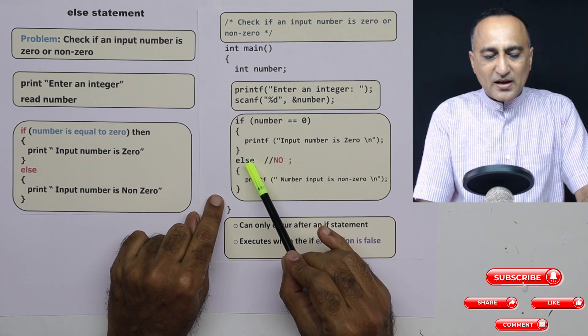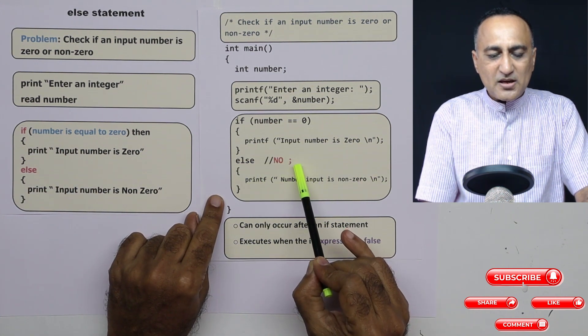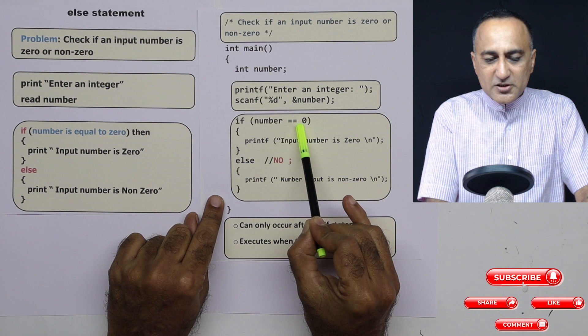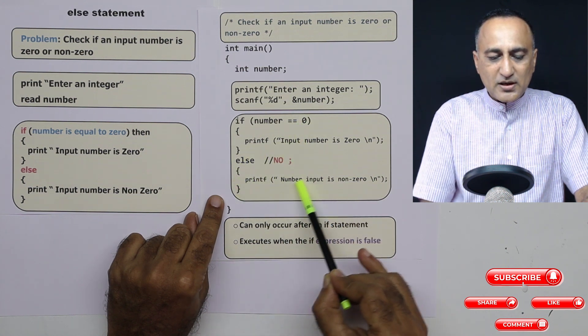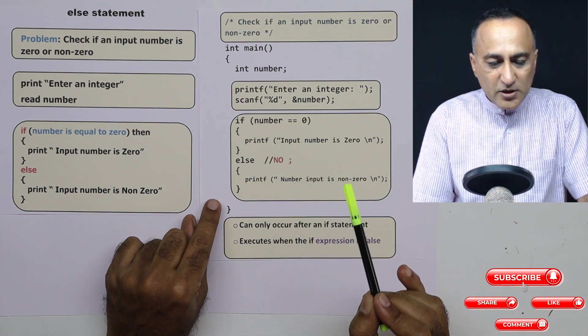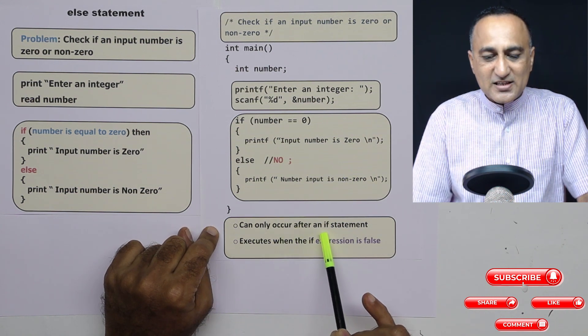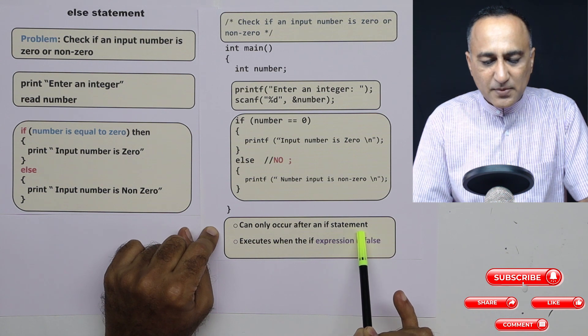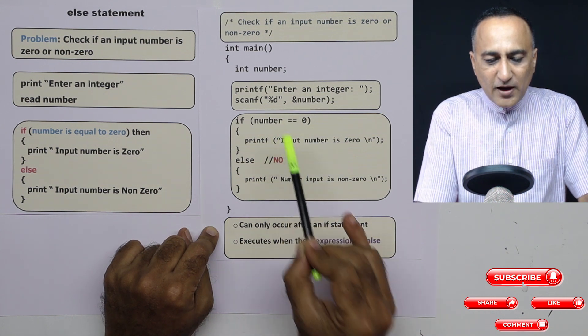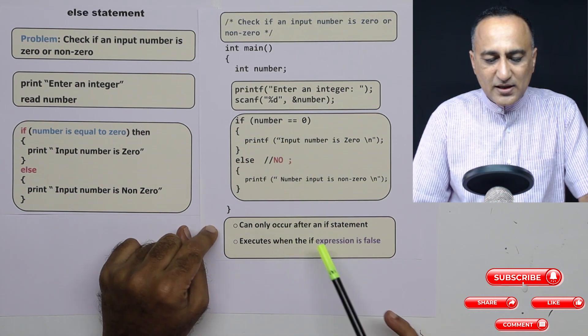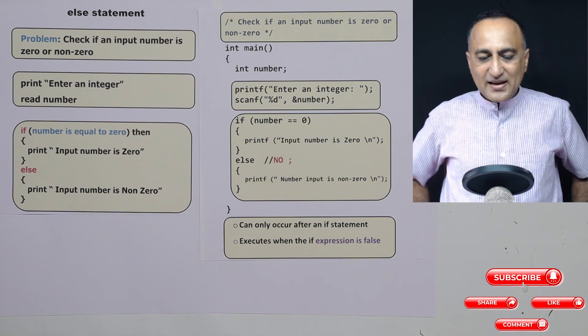So in the if-else, again after the else, there is no semicolon. If this part is true, it will not execute the else part. You need to understand a couple of things. Else can only occur or exist along with an if statement. So if the if happens to be false, then only the else part is going to get executed.